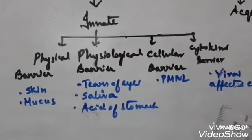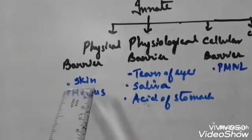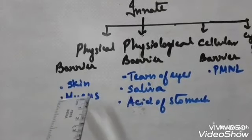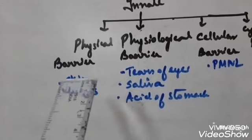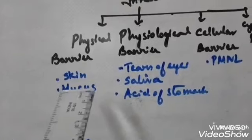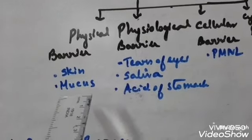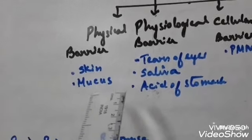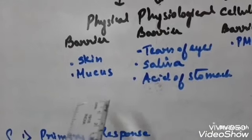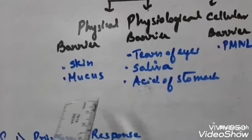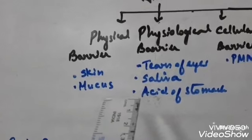The first is the physical barrier. Skin is the first physical barrier — the first line of defense — preventing entry of pathogens through the skin. Mucus is present in the epithelial lining of the respiratory tract, gastrointestinal tract, and urogenital tract. This mucus helps in trapping microbes and plays a specific role in the physical barrier.